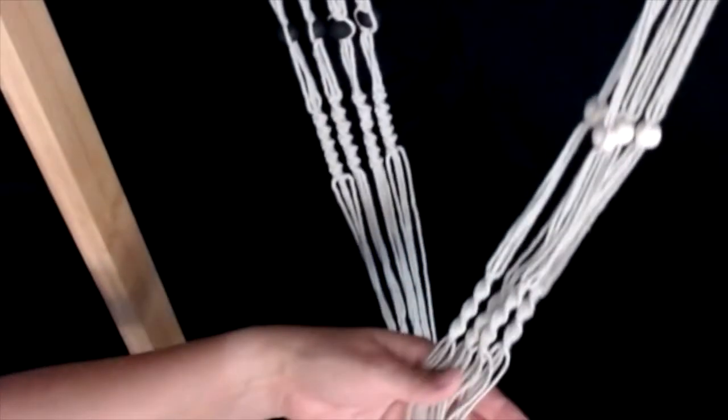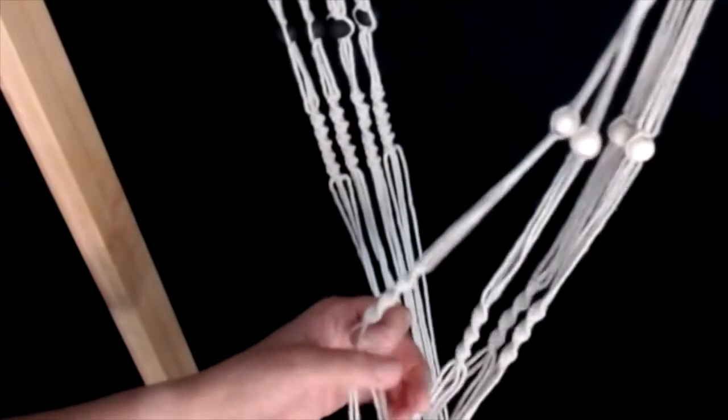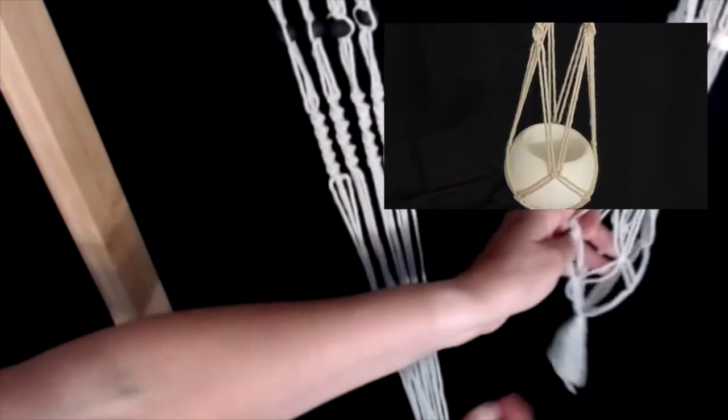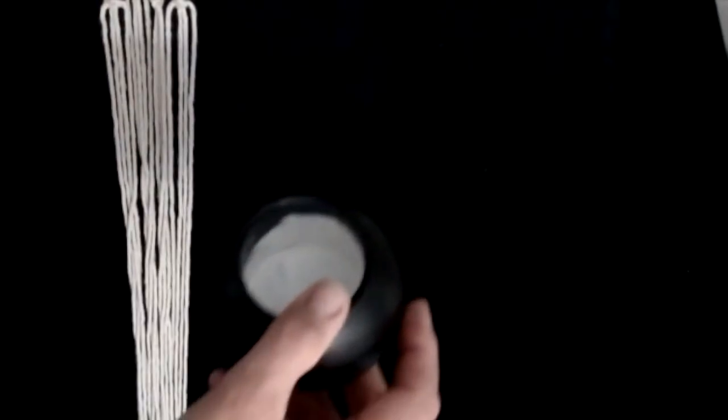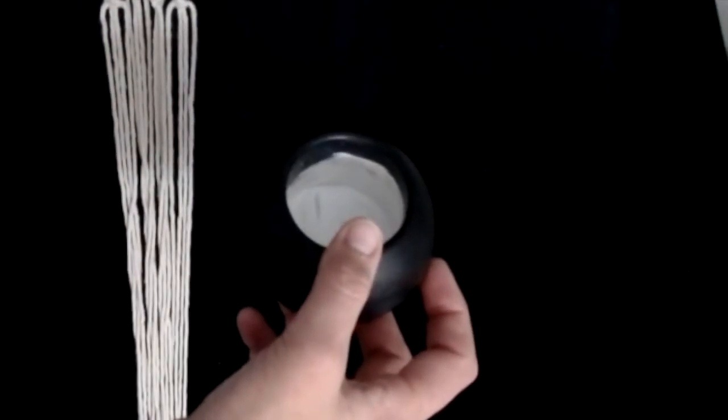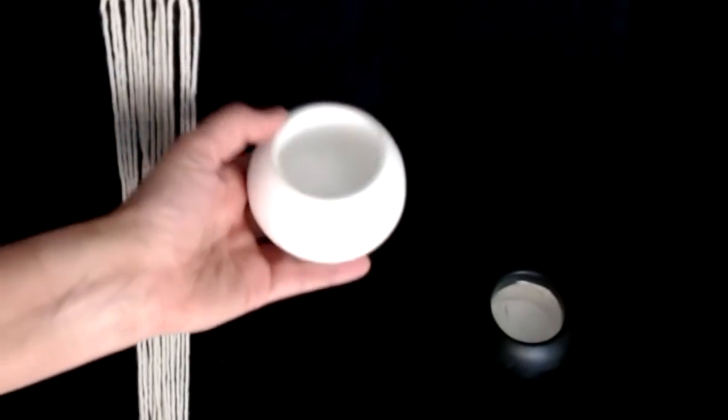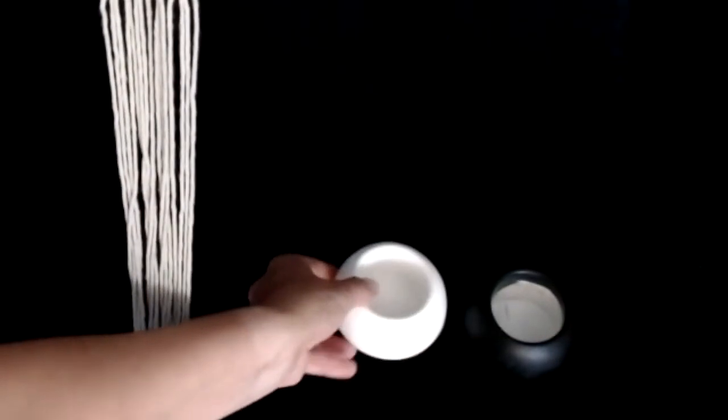We now need to create the basket for our pot to sit in. Be sure to have your bowl handy for measuring. I've got my one that I painted black earlier ready to go but I also have a white painted one so that you can see it in the video.